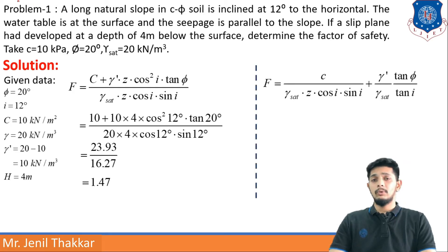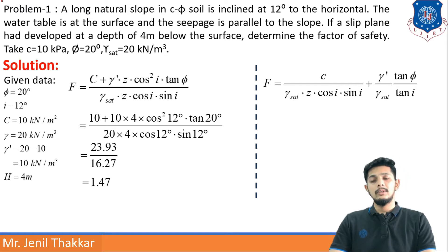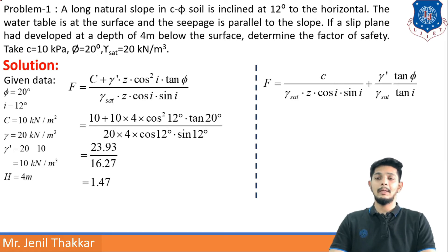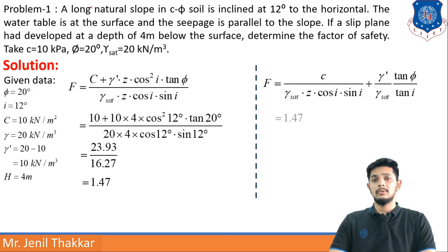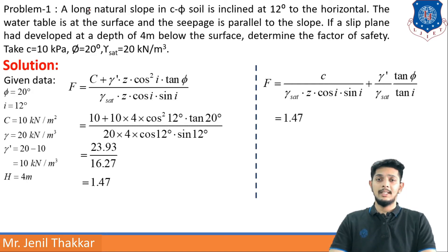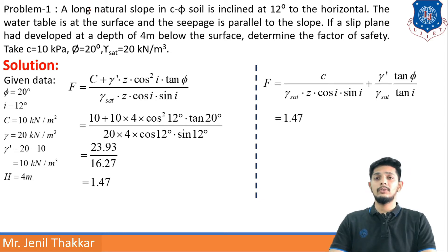Alternatively, the same formula can be written as: F = c / (γ_saturated × Z × cos i × sin i) + (γ_dash / γ_saturated) × (tan φ / tan i). This is the same mathematical version discussed in the previous video. Using both formula versions gives the same factor of safety of 1.47.